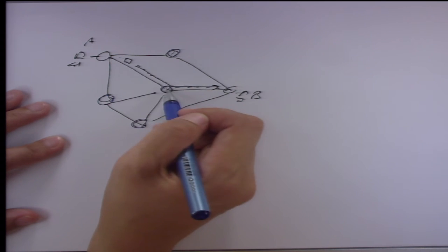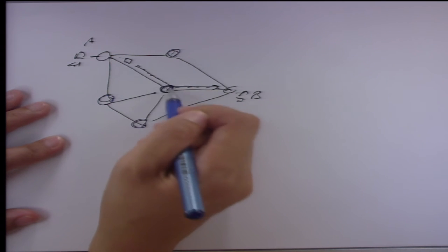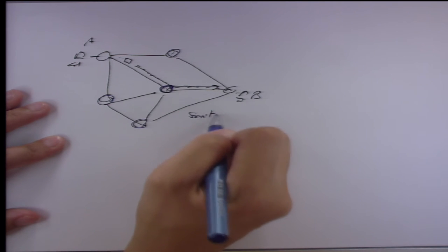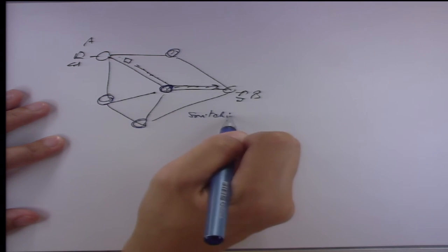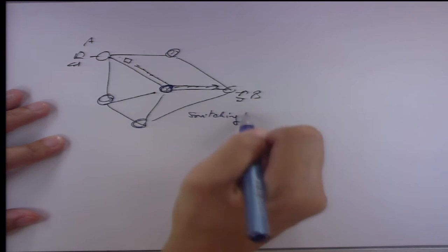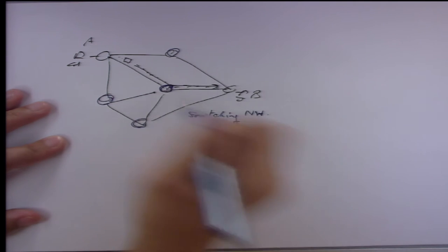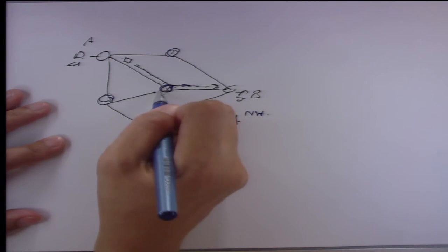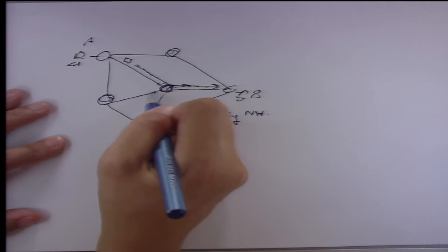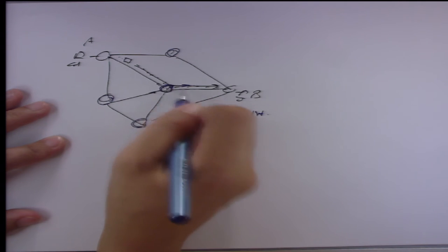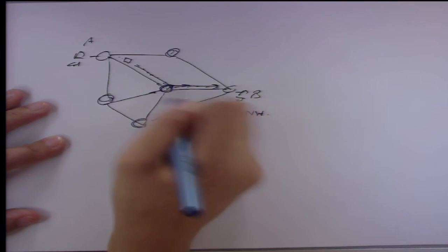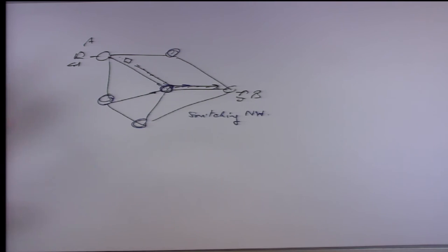So you receive from one line and switch out to another line. There are many lines coming in and going out, and you have to select the correct line to go out. This is called a switching network.